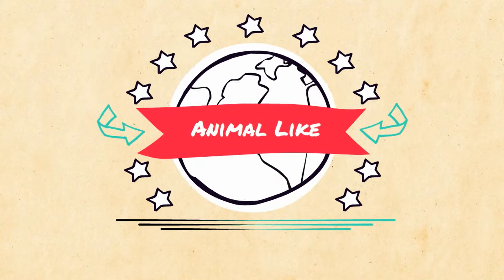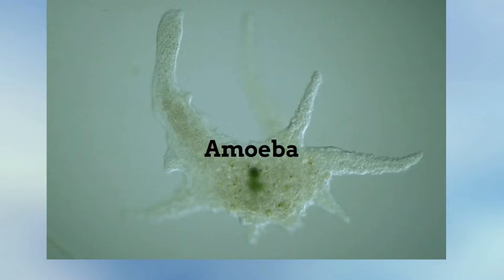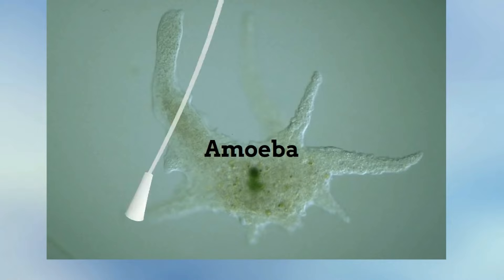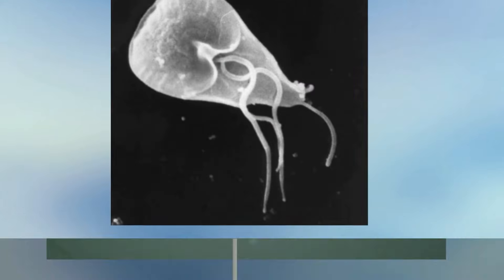Sarcodines move by using a pseudopod — a common example is an amoeba. Mastigophorans move by using a flagellum; Giardia is an example of this.